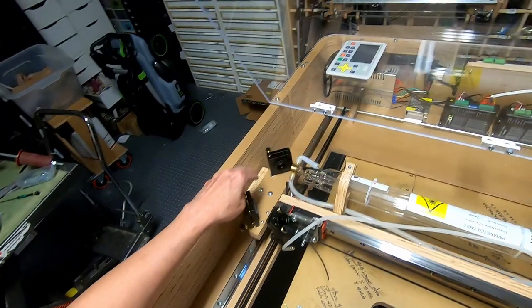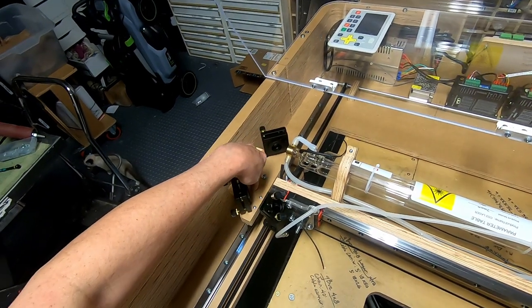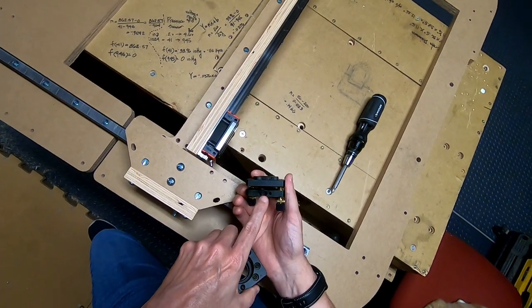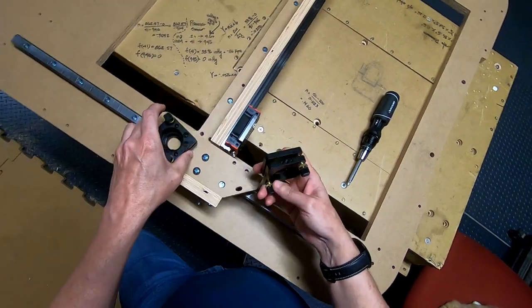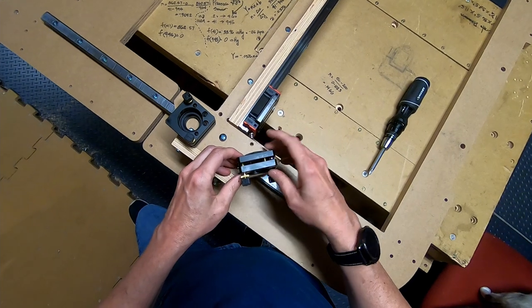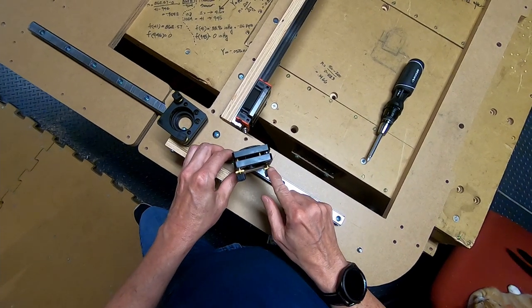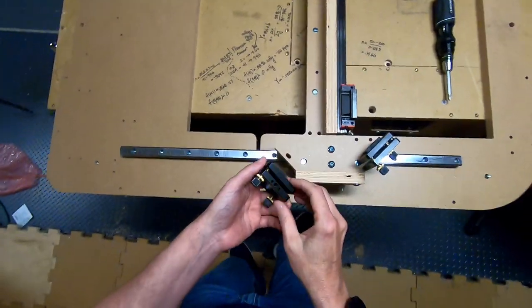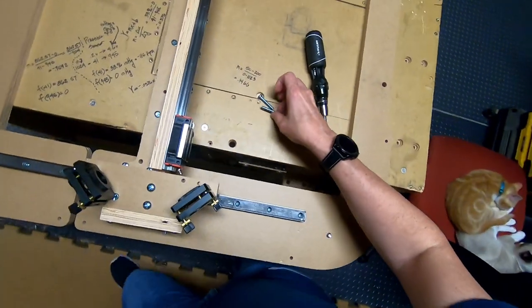The mirror mounts will be fastened to this mirror mount support piece. The mirror mount has an M6 hole here and an M6 hole here, and I'll be mounting it in this orientation. So this set screw is on this side on the outside, and I'll be doing the same thing here. You'll also need two M6 screws.